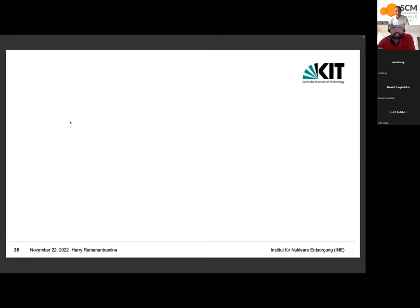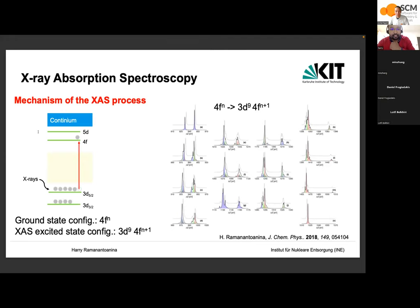The third application is X-ray absorption spectroscopy (XAS). The mechanism involves exciting a core electron — for example from the 3d core orbital of a lanthanide — to the valence 4f orbital. The interaction between the core hole (3d) and the 4f valence electrons gives rise to X-ray absorption spectra. The spectral profiles differ for each lanthanide element, so X-ray can be used to characterize lanthanide coordination compounds.